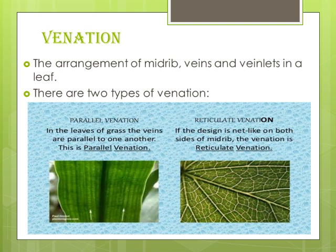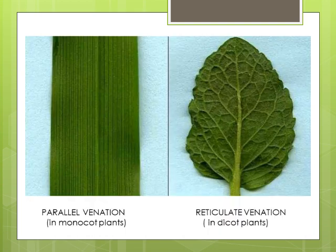In parallel venation, if the veins and veinlets run parallel to each other towards the tip of the leaf or towards the margin, it is known as parallel venation — there is no network formation. Parallel venation is mainly seen in the leaves of monocotyledonous plants, which have a single cotyledon in their seeds. Examples of monocotyledonous plants are sugarcane, wheat, rice and maize. In the next slide, two more diagrams of parallel and reticulate venation are shown — the tulsi leaf shows reticulate venation (dicot), while the parallel lines show parallel venation (monocot).